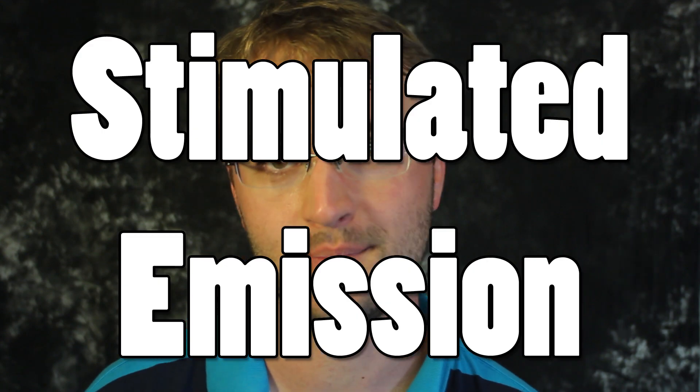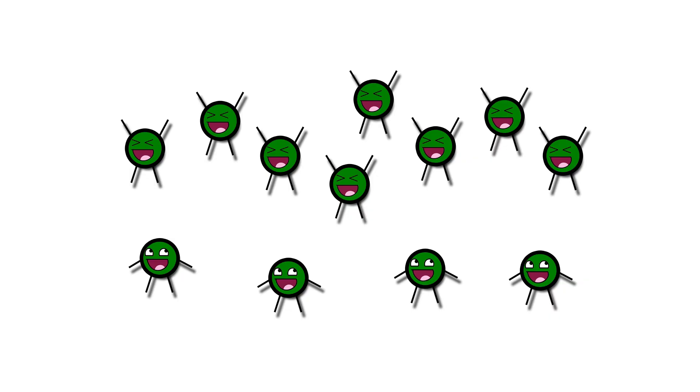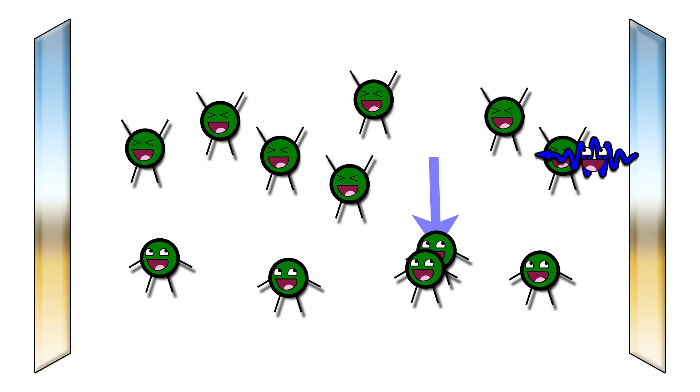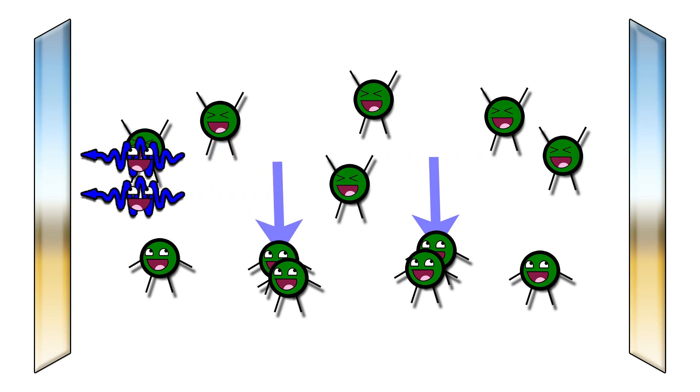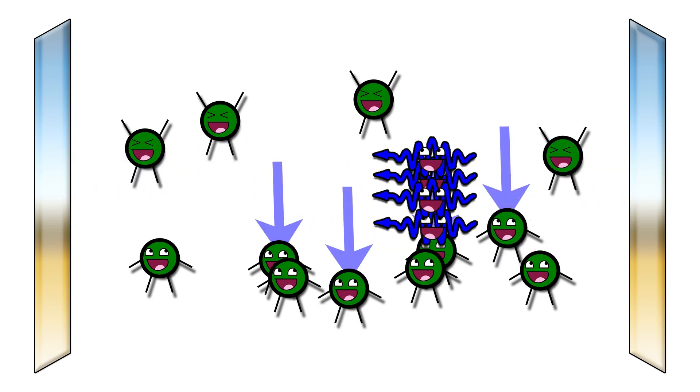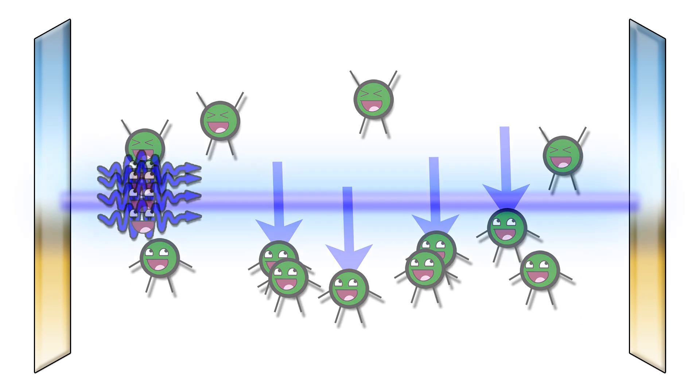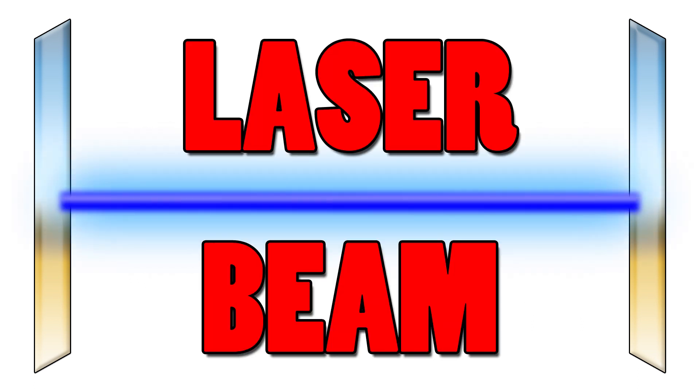And we have stimulated emission. Now if we put these atoms between two mirrors, the photons will start bouncing back and forth and running into more atoms, recruiting more and more photons until we have a beam. A laser beam. It's pretty cool that all this happens at the end of your keychain.